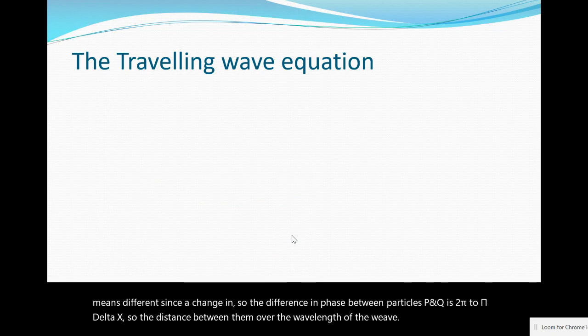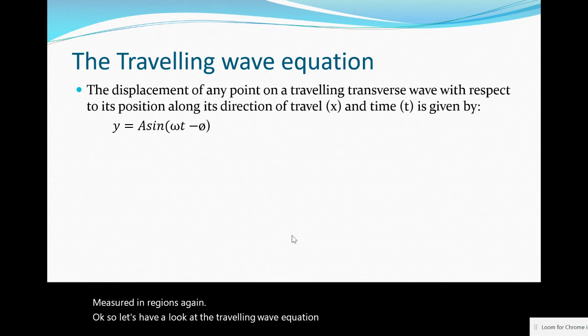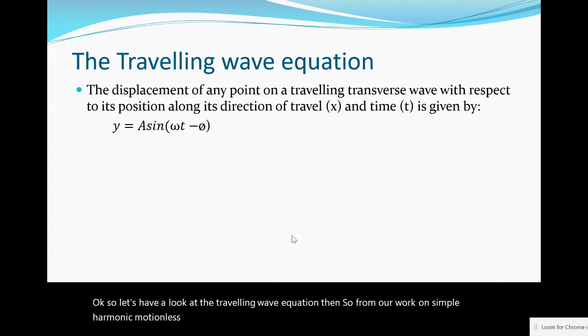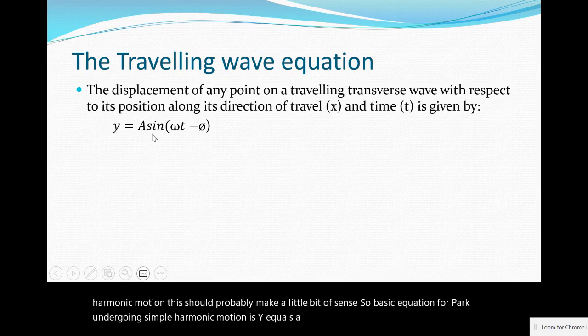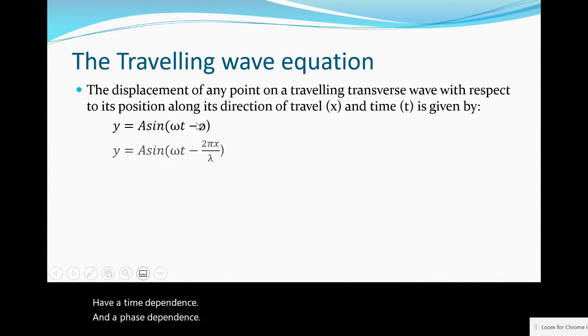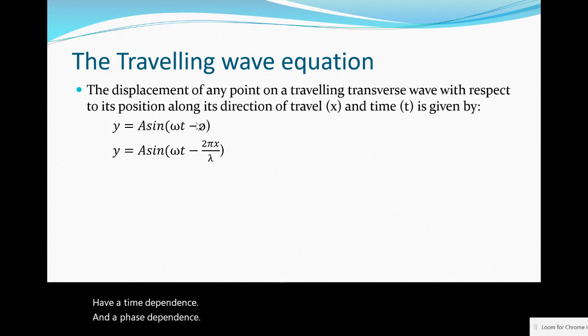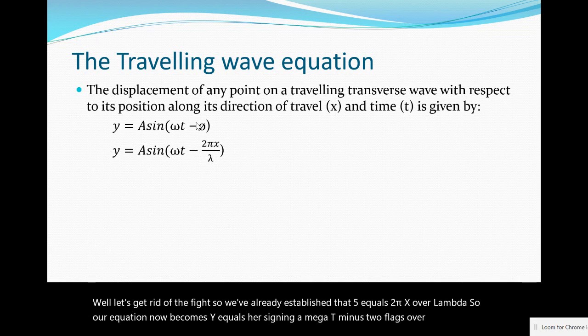Let's have a look at the traveling wave equation. From our work on simple harmonic motion, the basic equation for a particle undergoing SHM is y = A sin(ωt). Because we're going to model all the particles on the wave, our function should have a time dependence and a phase dependence. We've already established that φ = 2πx/λ, so our equation becomes y = A sin(ωt - 2πx/λ). We know ω = 2πf.